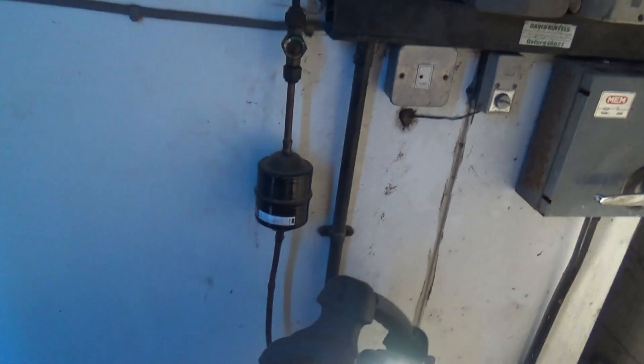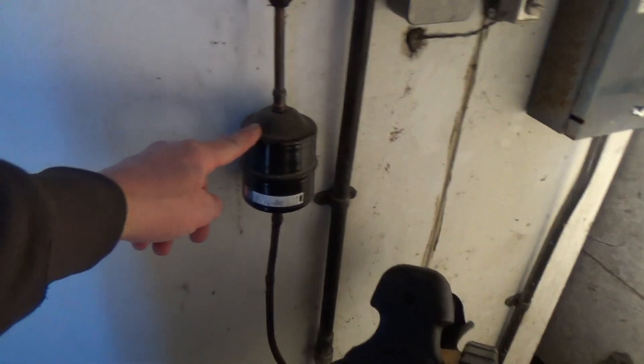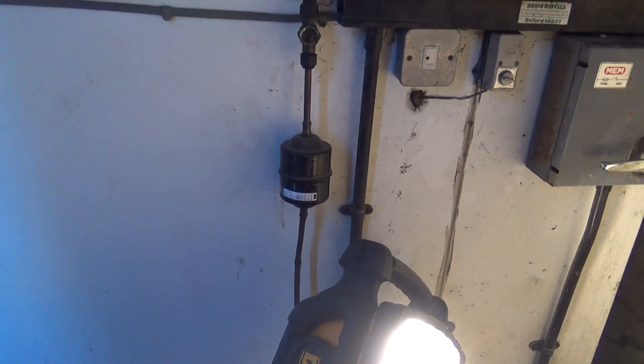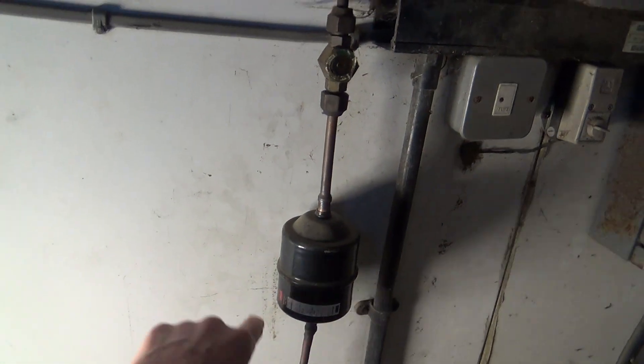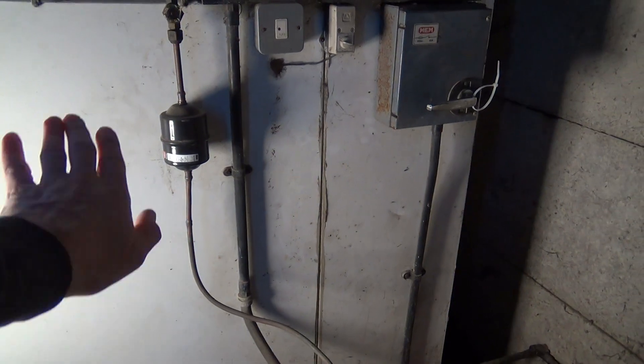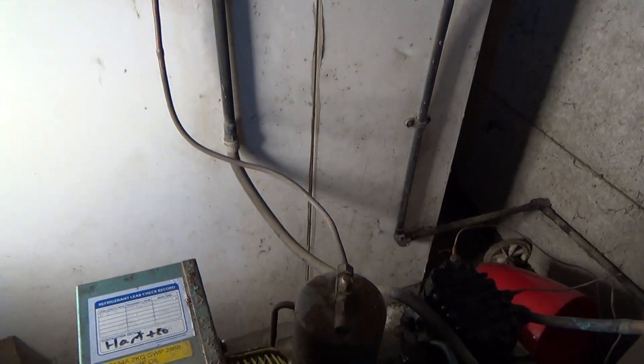So we've got to change the dryer really. So 163. I'll see what I've got on the van. There should be enough give on that just to cut it, because it dips down as it comes off there anyway, off the receiver. Let's see what we can do.